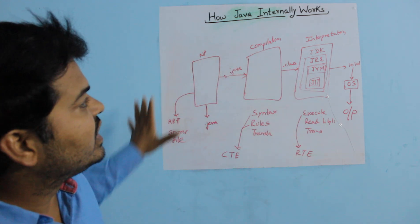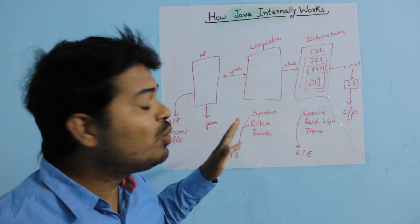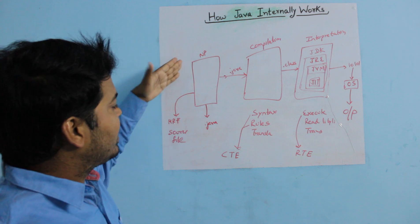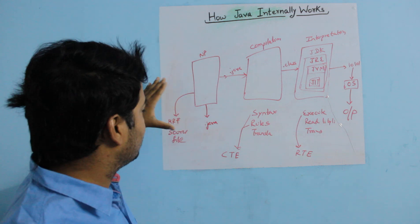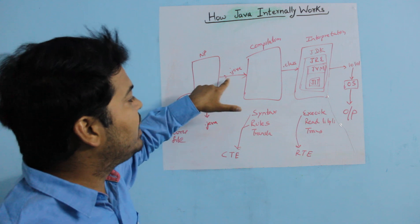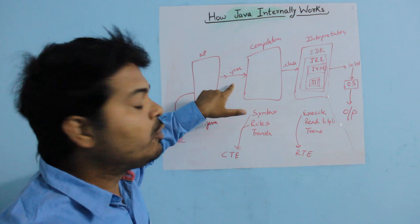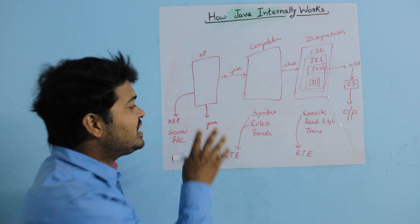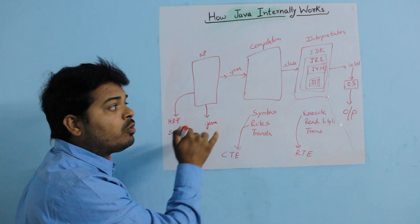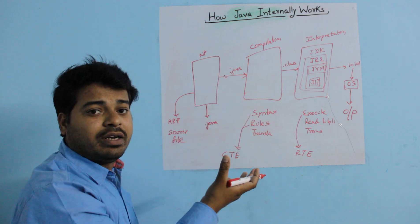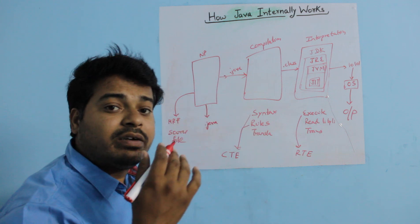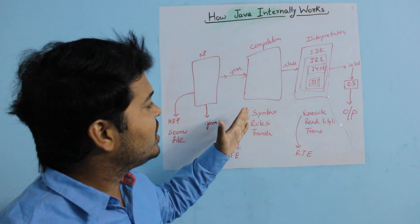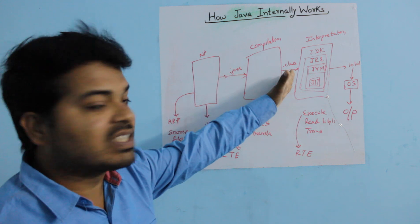So this is the internal structure of how Java internally works. Always remember: whatever file you write is in human-readable format, also called a source file, and you save it with an extension of .java. To make the machine understand it, it goes through two stages — compilation and interpretation. In compilation, it converts your .java file to a .class file.